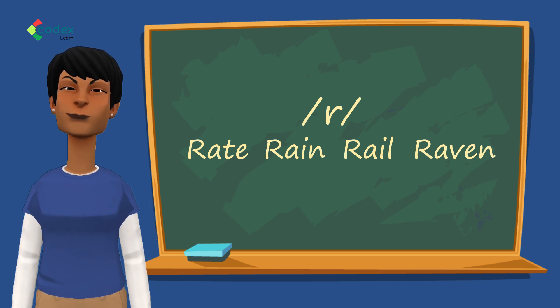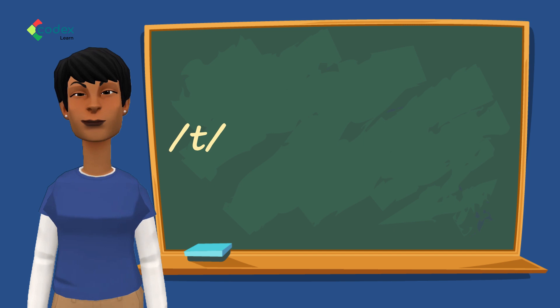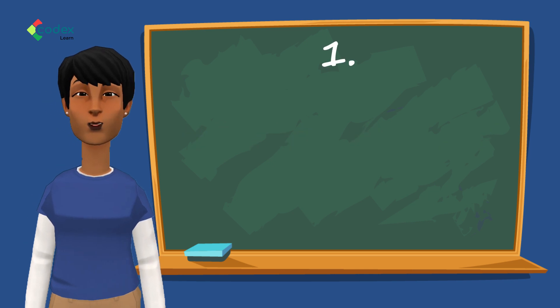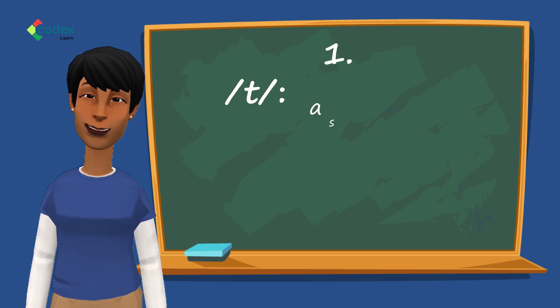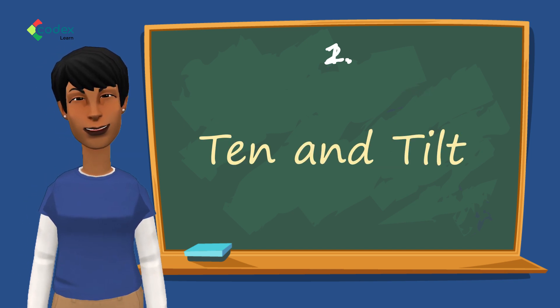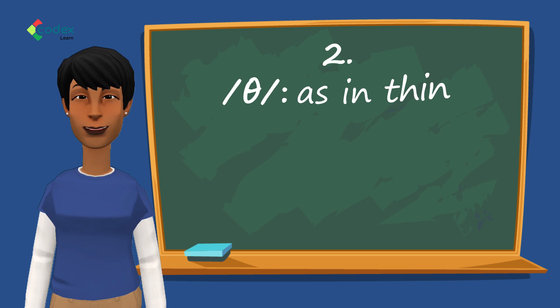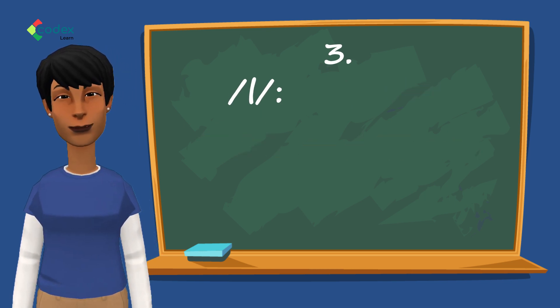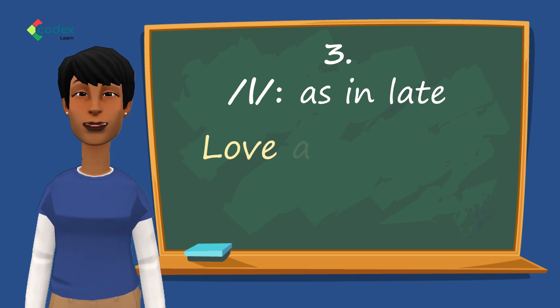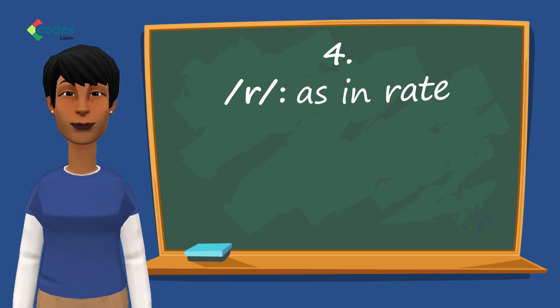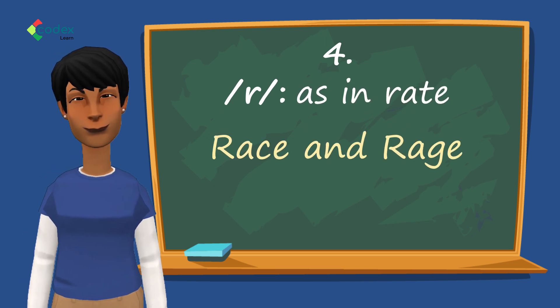We have practiced how to pronounce the consonant sounds T, TH, L, and R. Here are some words to practice with. Number one, for T as in TIN, we have TEN and TILT. For TH as in THIN, we have THICK and THORN. For L as in LATE, we have LOVE and LAUGH. For R as in RATE, we have RACE and RAGE.